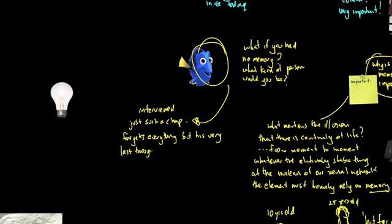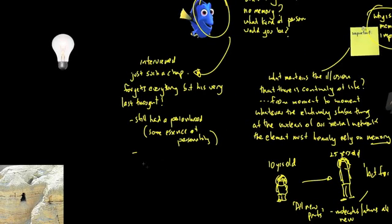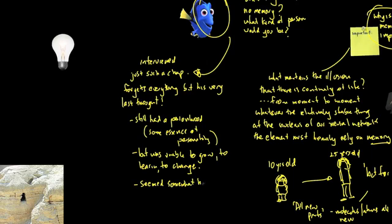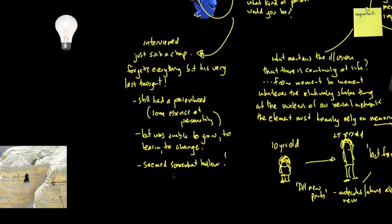And what he does find is that this person does have what he terms a personhood, which I guess is some kind of essence of personality. So he can have a conversation with him, he can feel like he's talking to someone that has their own kind of uniqueness somewhat. But this person was unable to grow, unable to learn, unable to change, and seemed, I think in the terms that the author used, somewhat hollow. And it was a really sad little episode in the book. So this is how important memory is.